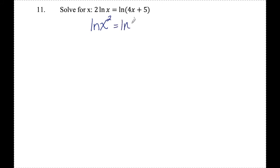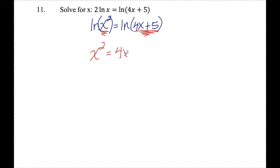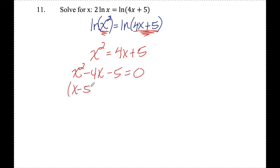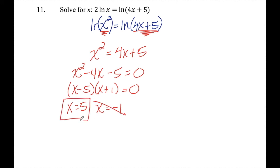Number eleven: solve for x. Since I have one ln on each side of the equation, I'm going to move the coefficient so I can rewrite this as ln x squared equals ln of four x plus five. Since ln of something equals ln of something else, what I'm taking the ln of must also be equal, so I can drop the ln signs and get x squared equals four x plus five. Subtracting and factoring gives x minus five times x plus one, so x equals five or x equals negative one. I can't take the ln of a negative number, so I reject x equals negative one. My only solution is x equals five.